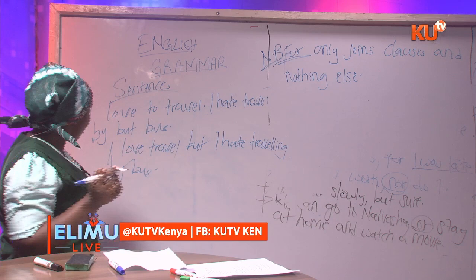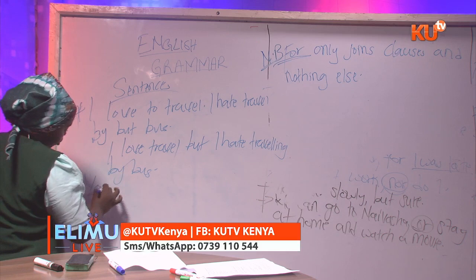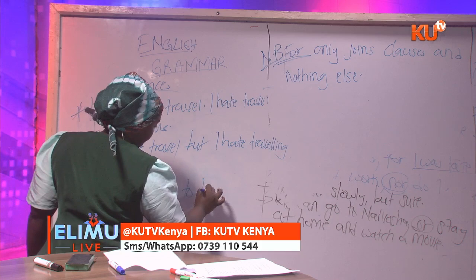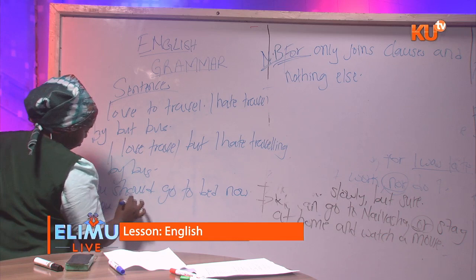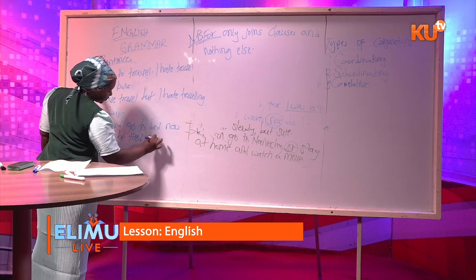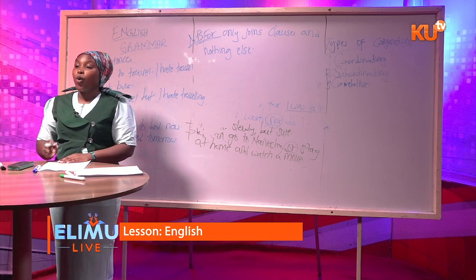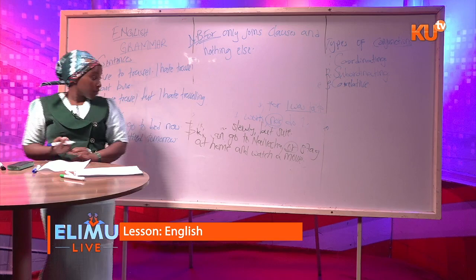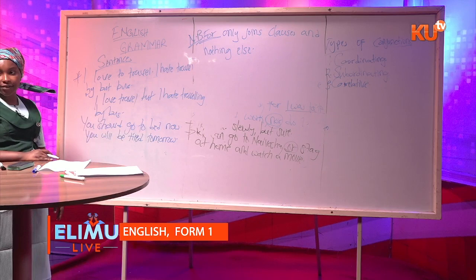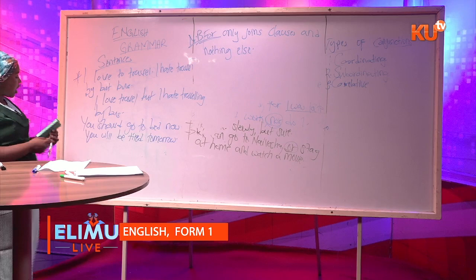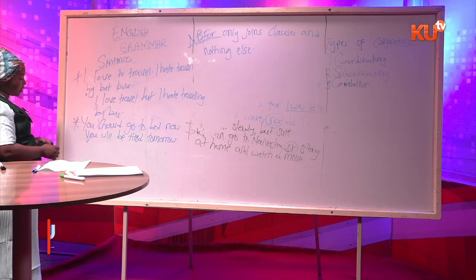Another example: 'You should go to bed now' and 'You will be tired tomorrow.' Ask yourself what ideas are being brought about. These two sentences are bringing out an alternative, and the conjunction used to bring out an alternative is 'or.' So we join them to say: 'You should go to bed now, or you will be tired tomorrow.'